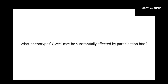Our weights are indeed informative. Now we want to answer: what phenotypes GWAS may be substantially affected by participation bias? If we can identify a set of such phenotypes, we can consider what adjustment methods to apply. The results can also help us see the underlying genetic architecture of participation.